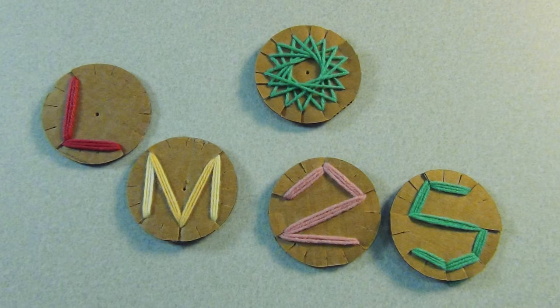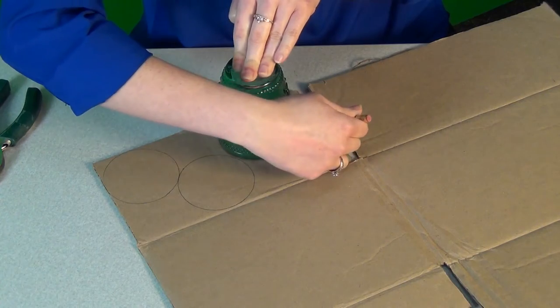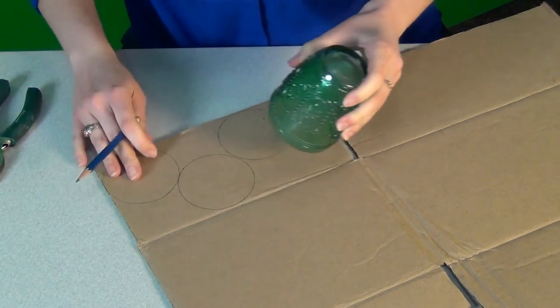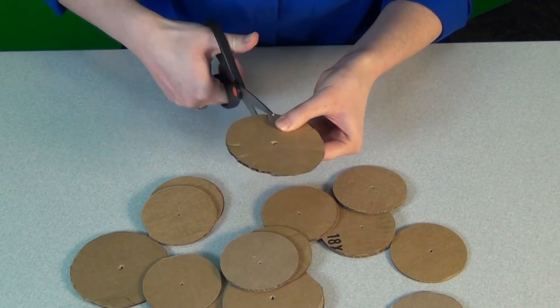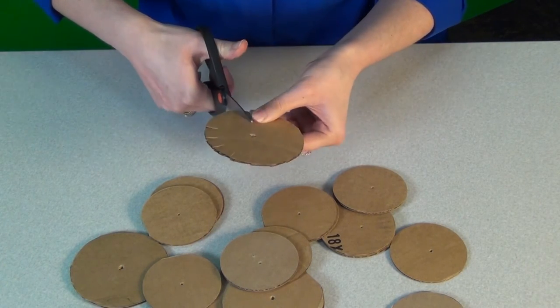Now, let's try some yarn wrapping. These yarn wrap circles can be used as decorations or ornaments to show off your child's work. First, trace a few circles onto cardboard and cut them out. Next, cut notches all the way around the circles. Mine are about half an inch or a centimeter apart.